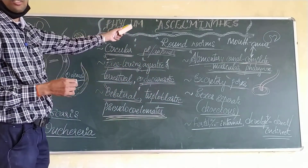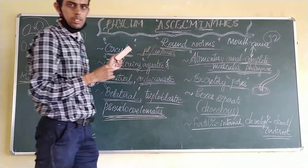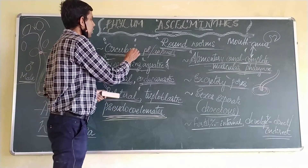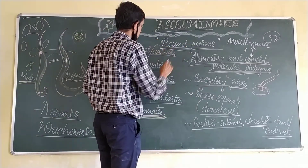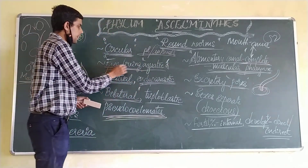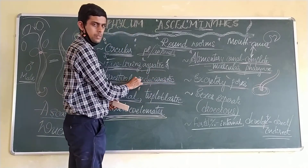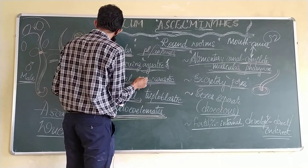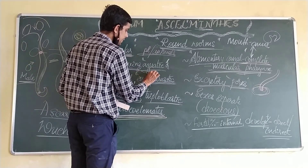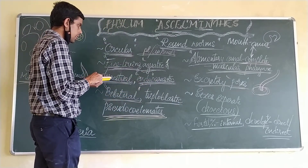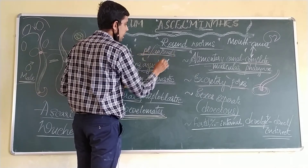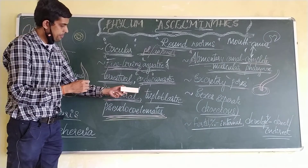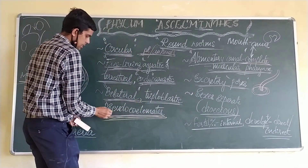To summarize: Phylum Nematoda, also called roundworms, comprises organisms with a circular body, hence the name roundworms. Their habitat is either free-living — aquatic or terrestrial — or parasitic, which is endoparasitic in nature, present inside plants or animals. The symmetry is bilateral, and they are triploblastic with pseudocoelom.